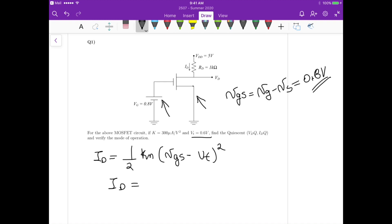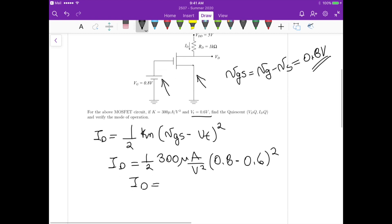So in this case Id is one half 300 microamperes per volt squared, times 0.8 minus 0.6 squared, and this gives us a drain current that is 6 microamperes.